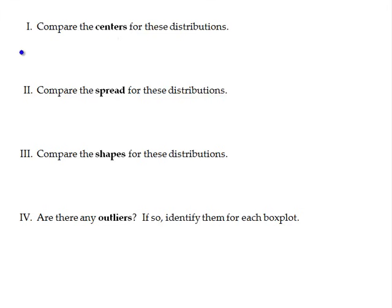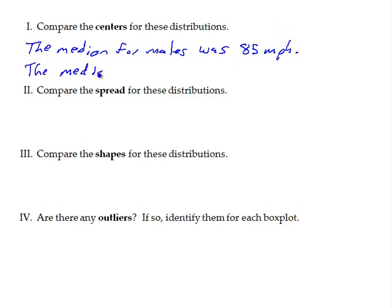So we say the median for males was 85 miles per hour. The median for females was a little bit less, was about 82 miles per hour. So the male's center is a little bit larger than the female's center.